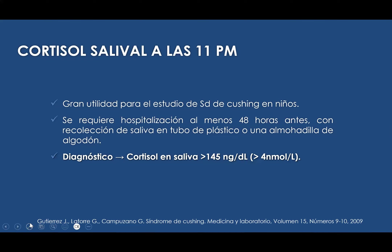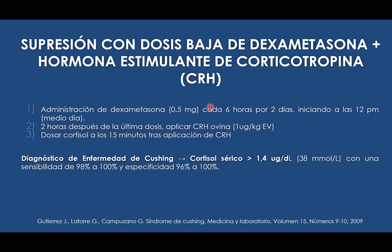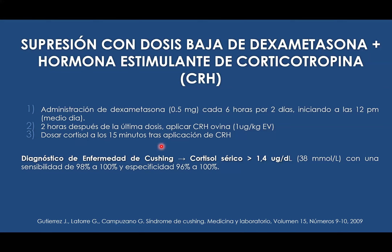El cortisol salival nos va a servir para hacer diagnóstico cuando el cortisol en saliva es de 145 nanogramos por decilitro. También tenemos la supresión con dosis baja de dexametasona más hormona estimulante de corticotropina, usando una hormona sintética bovina: se administra dexametasona 0.5 miligramos cada 6 horas por 2 días iniciando al mediodía, y 2 horas después de la última dosis — es decir, a las 48 horas — se aplica hormona liberadora de corticotropina 1 microgramo por kilogramo endovenoso y se dosa el cortisol a los 15 minutos. Para la enfermedad de Cushing con afectación hipofisiaria, el cortisol tiene que estar más de 1.4 para hacer el diagnóstico.